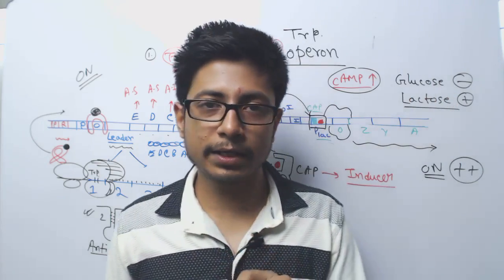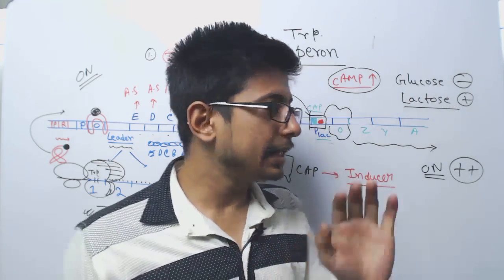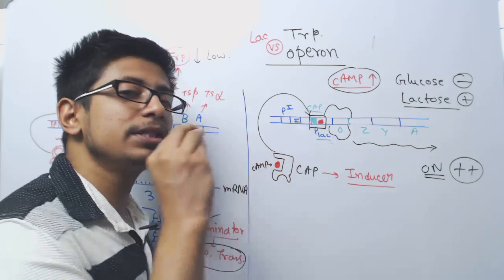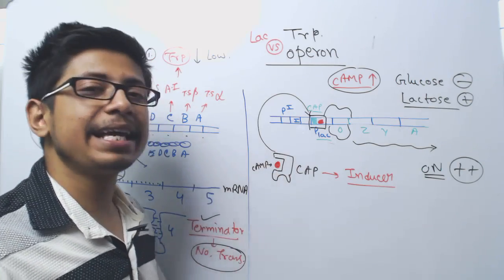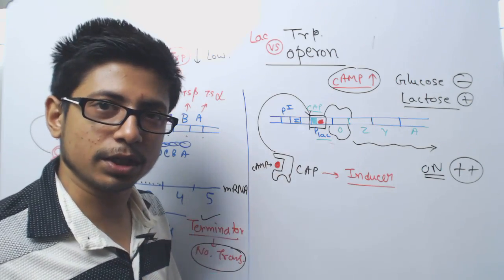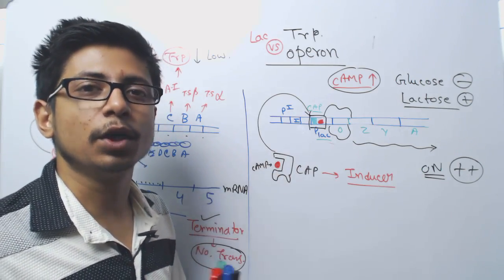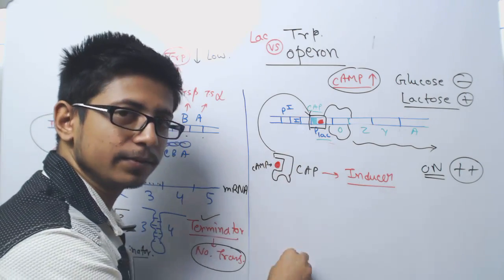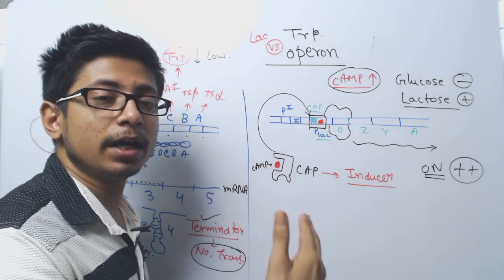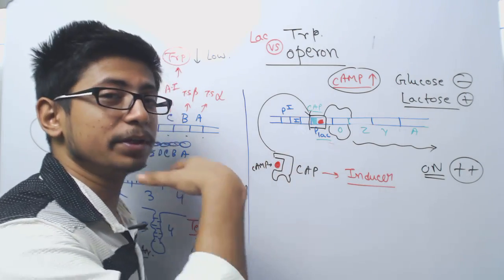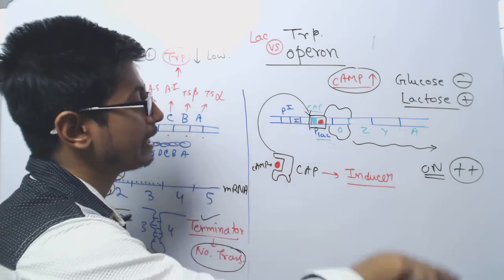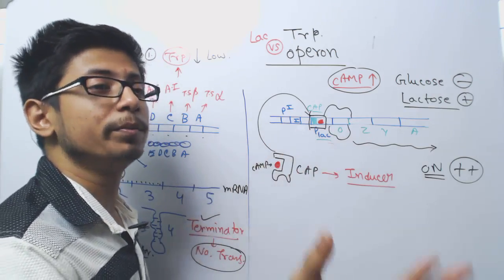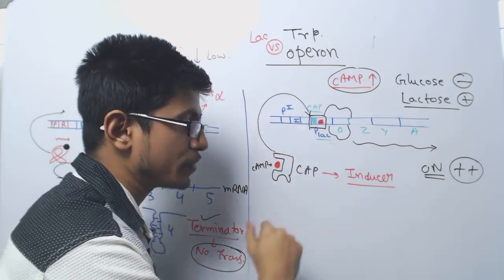The second difference: in the lac operon, lactose itself acts as an inducer of the operon. So if lactose is present, the operon will be turned on. If lactose is absent, the operon will be turned off.